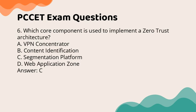Question 6: Which core component is used to implement a zero-trust architecture? a. VPN concentrator. b. Content identification. c. Segmentation platform. d. Web application zone. Answer: c.